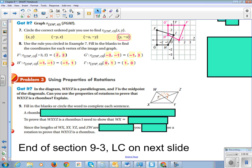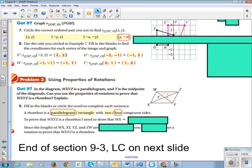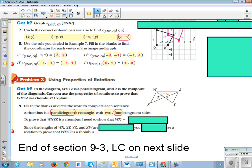So a rhombus is a parallelogram with 4 congruent sides. To prove WXYZ is a rhombus, I need to show that WX is equal to XY is equal to YZ is equal to ZW.